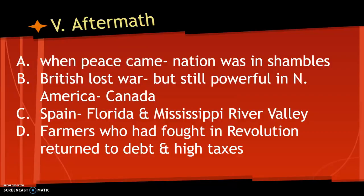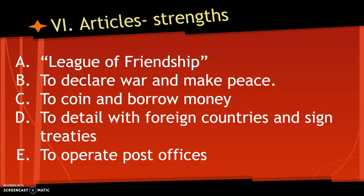When peace finally comes, we find that the country was actually in shambles. Britain had lost the war but still controlled Canada. Spain controlled Florida and the Mississippi River Valley. The farmers who had fought in the revolution went back to their homes with debt, high taxes, and no way to pay them. The country was in ruins. Our government at this point was the Articles of Confederation.